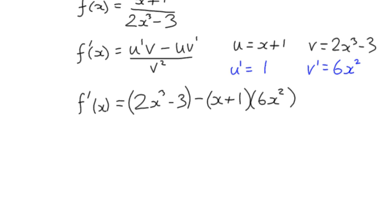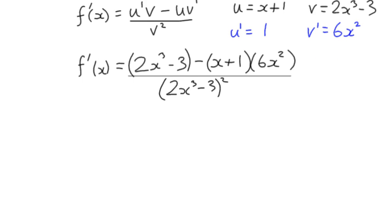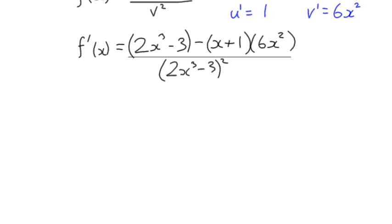It's very important because there's a subtraction sign in the numerator that whatever gets written down after that has brackets in it because you will end up multiplying by negative 1. We have a denominator, of course, which is v squared. It's the original value of v, 2x cubed minus 3 all squared. Don't try to square out that term at any point. It can be left just like that in squared form. There's no need to try to simplify it by squaring out that bracket. We're more interested in what's going on in the numerator.